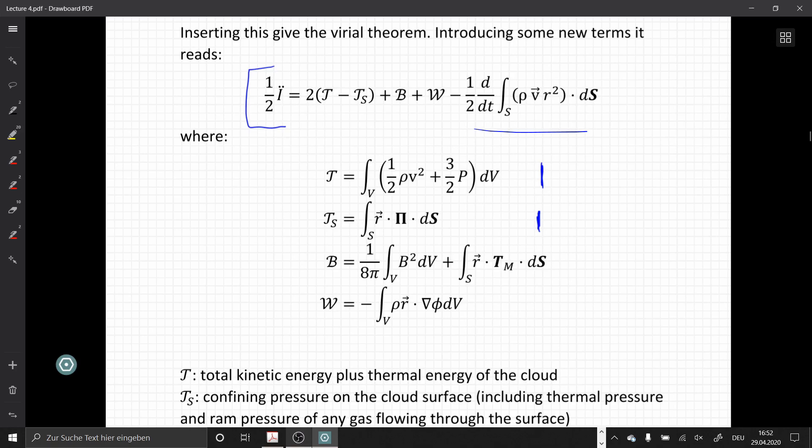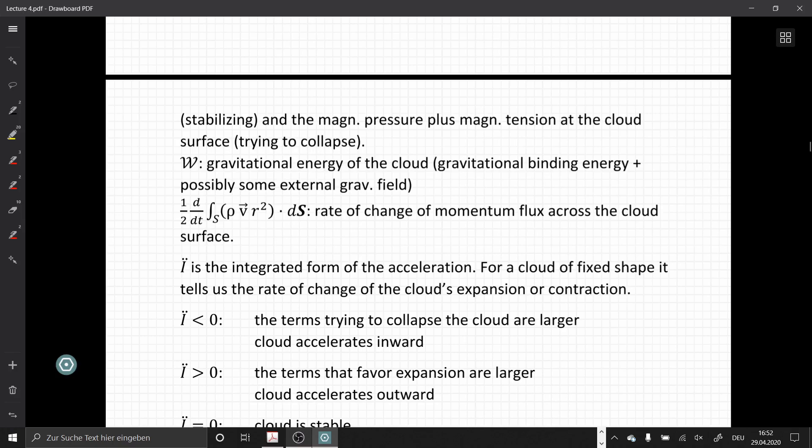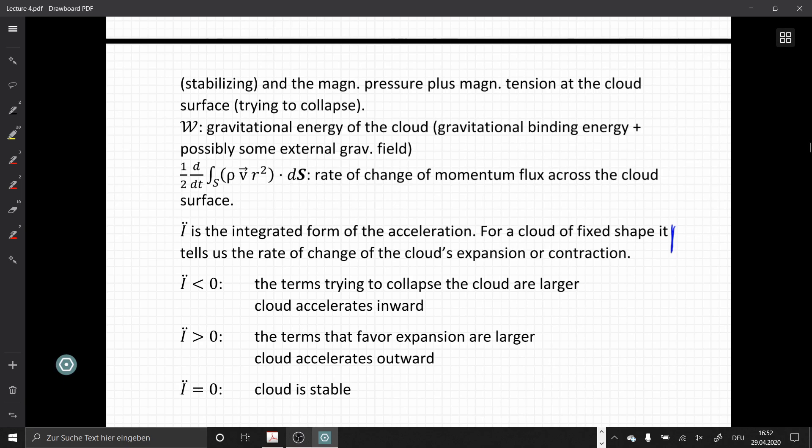The term at the end here is when we look at this, this is the rate of change of momentum flux across the cloud surface. I dot dot is the integrated form of the acceleration, so for a cloud of a fixed shape, it tells us the rate of change of the cloud's expansion or contraction.